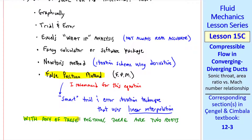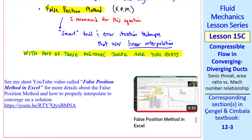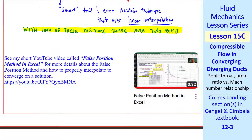The false position method is a smart trial-and-error iteration technique that uses linear interpolation to converge more rapidly than simple trial and error. Keep in mind that with any of these methods there are two roots — one subsonic and one supersonic — so you need to know where you are in the flow. If you're upstream of the throat, pick the subsonic root; downstream, pick the supersonic root. If you're not familiar with the false position method, I have a short YouTube video called 'False Position Method in Excel,' about three and a half minutes, where I explain and demonstrate setting it up in Excel.